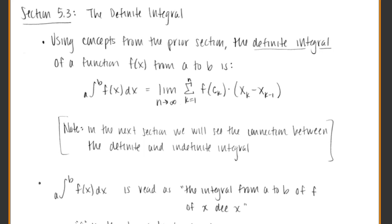Here in section 5.3, what we're going to focus on is the definite integral. The indefinite integral is the one where we just added plus C after taking the integration. The definite integral is specifically when we're looking at finding the integral over a specific closed region, like from A to B.